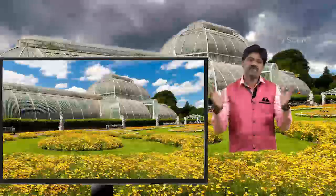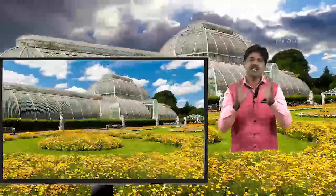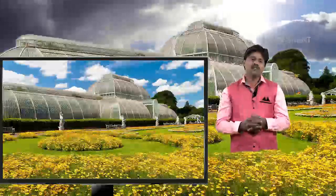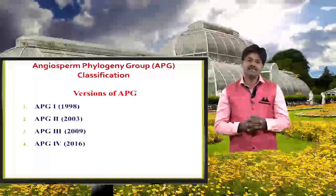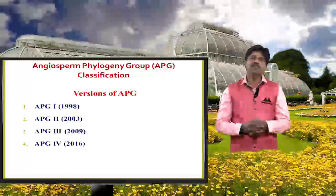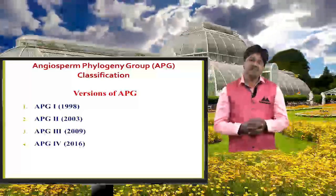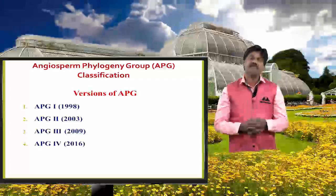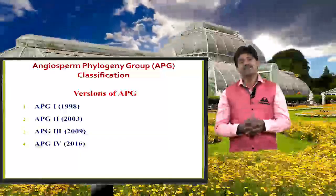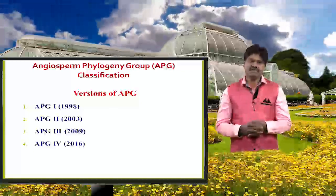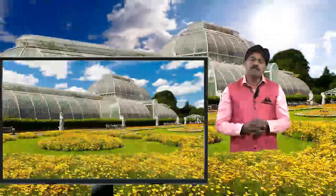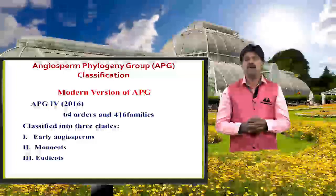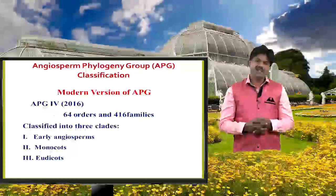Why did we change to APG? There is a famous quote: the word 'change' never changes — everything else will change. That is why APG also has four versions. Version 1 was released in 1998, version 2 in 2003, version 3 in 2009, and version 4 in 2016. The fourth version is the most recent and updated version.